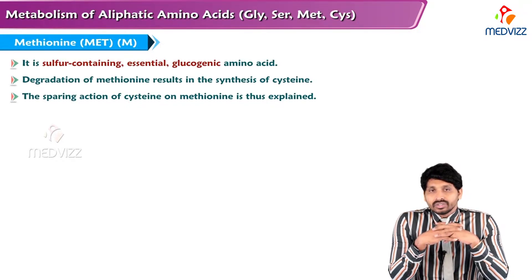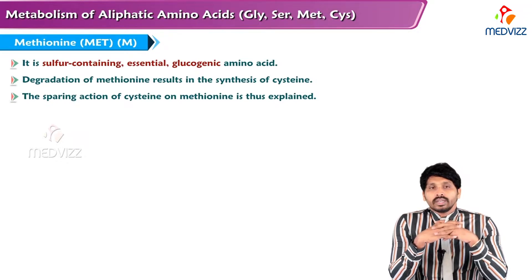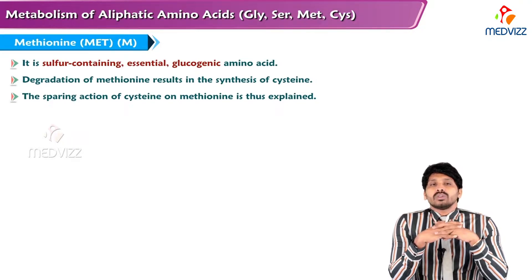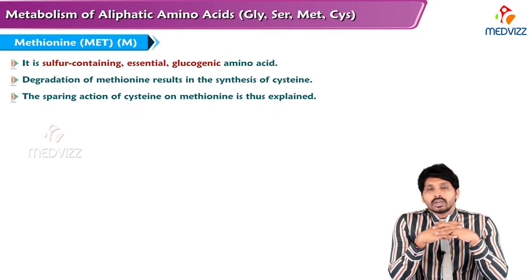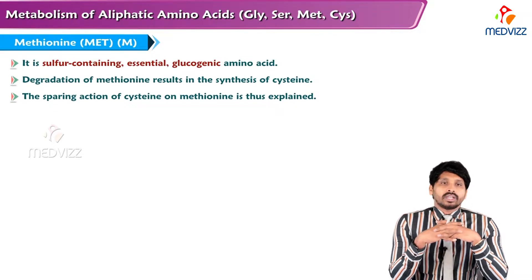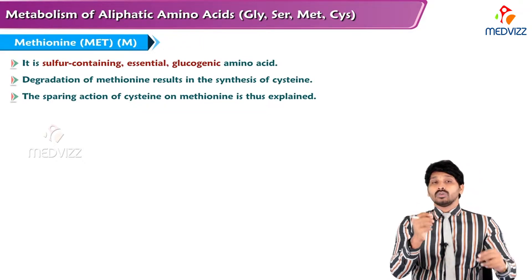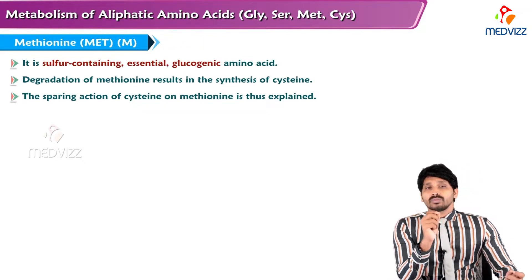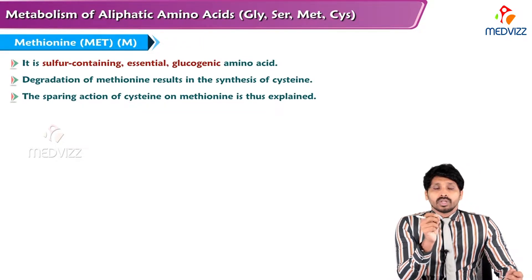Methionine is a sulfur-containing essential glucogenic amino acid. Because Methionine cannot be synthesized in the body, it is essential, and based on its metabolic fate, it comes under glucogenic amino acid. When you remove the amino group from Methionine, the leftover carbons are involved in glucose formation. Moreover, Methionine is sulfur-containing because the functional group present in Methionine is a sulfur group.